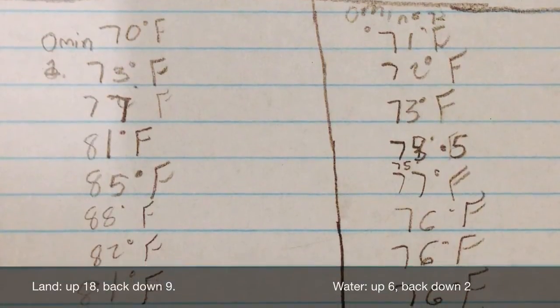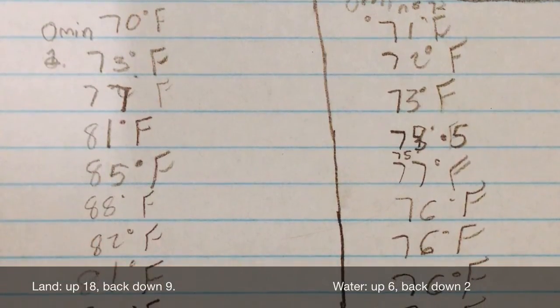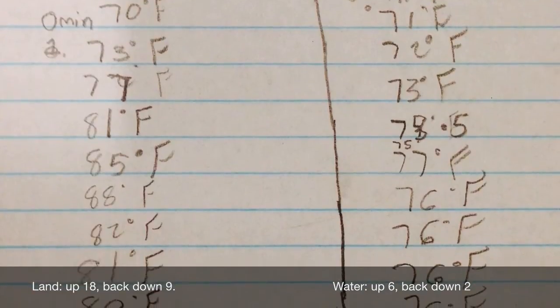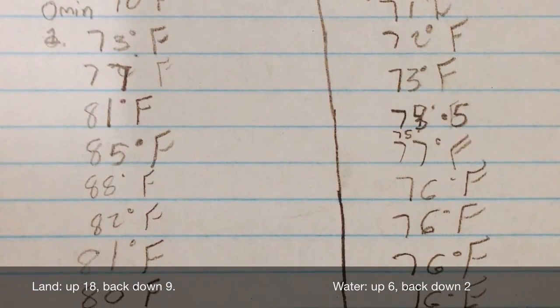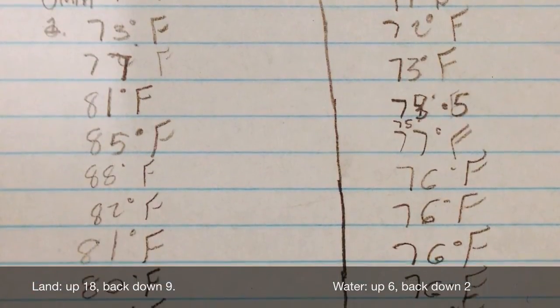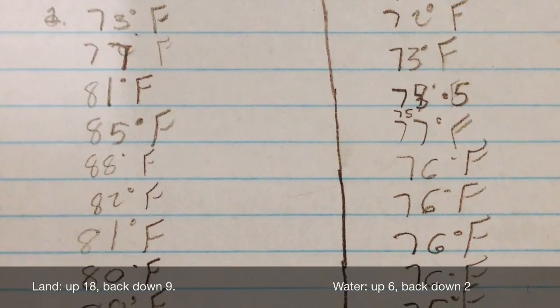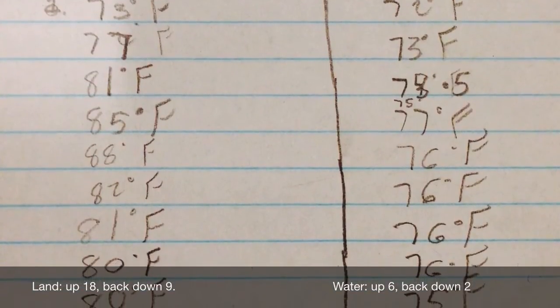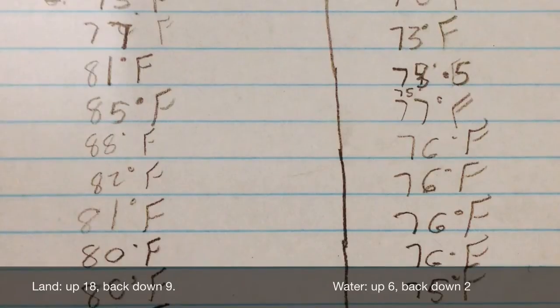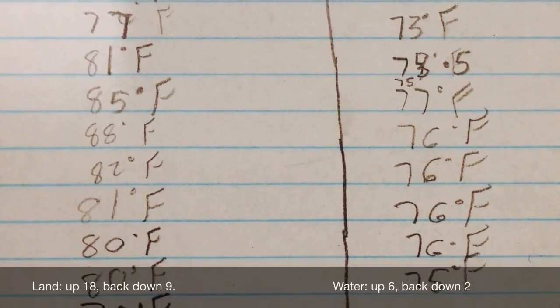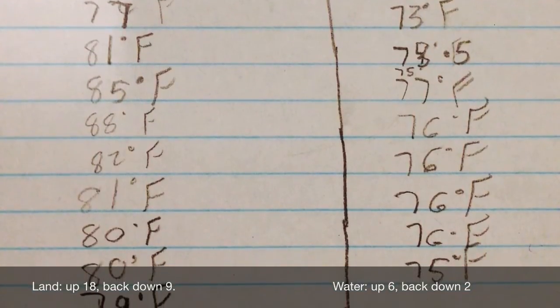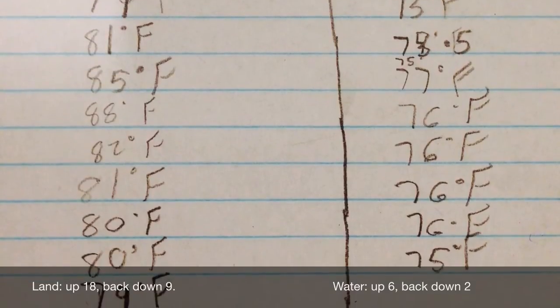So we are going to record the temperature of the sand and the water every two minutes for a period of time. We will turn the bulbs on at the same time, and then every two minutes take a temperature reading for both and record the information. And after 10 minutes or so, we turn the bulb off and continue to take the temperatures every two minutes.